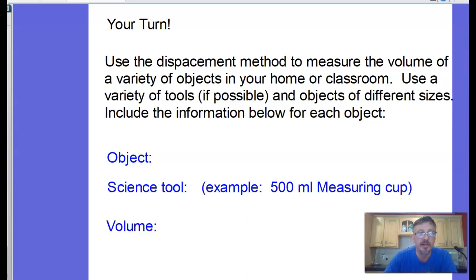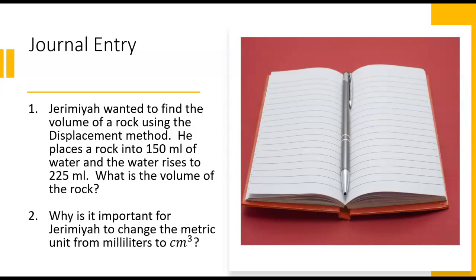It's time for our journal entry. Question 1: Jeremiah wanted to find the volume of a rock using the displacement method. He places a rock into 150 milliliters of water and the water rises to 225 milliliters. What is the volume of the rock? Question 2: Why is it important for Jeremiah to change the metric unit from milliliters to centimeters cubed? Take a moment and answer the questions, then pause the video.